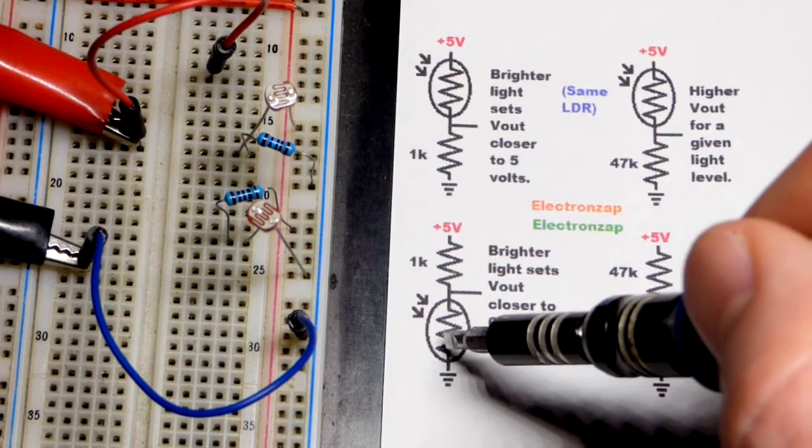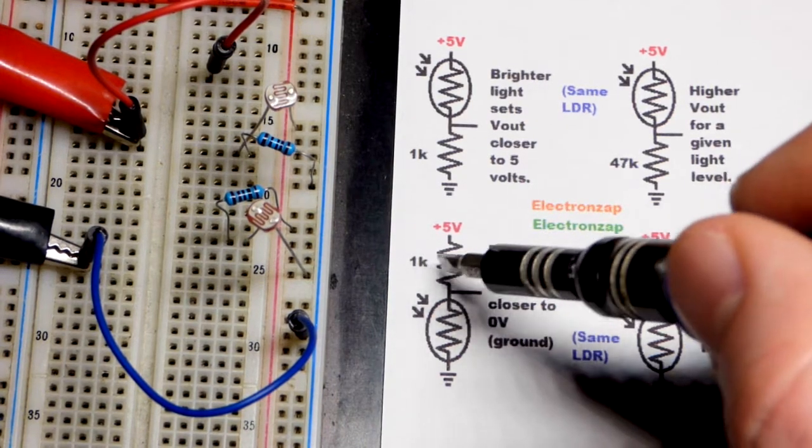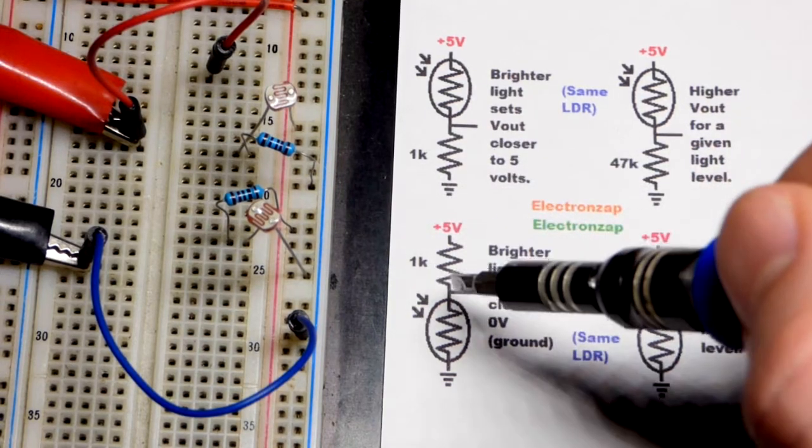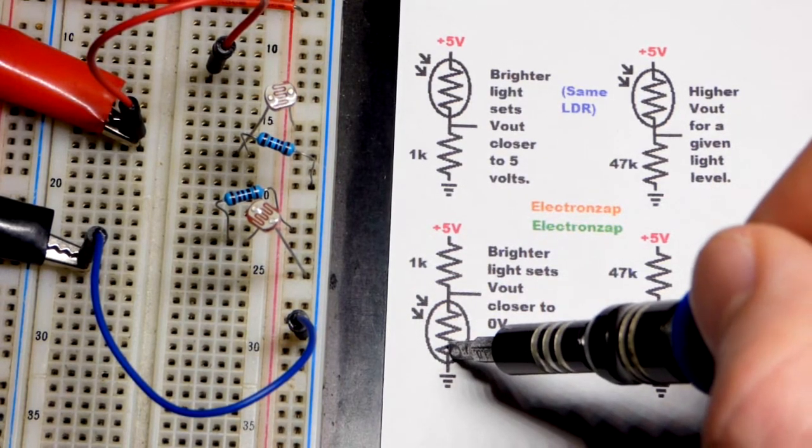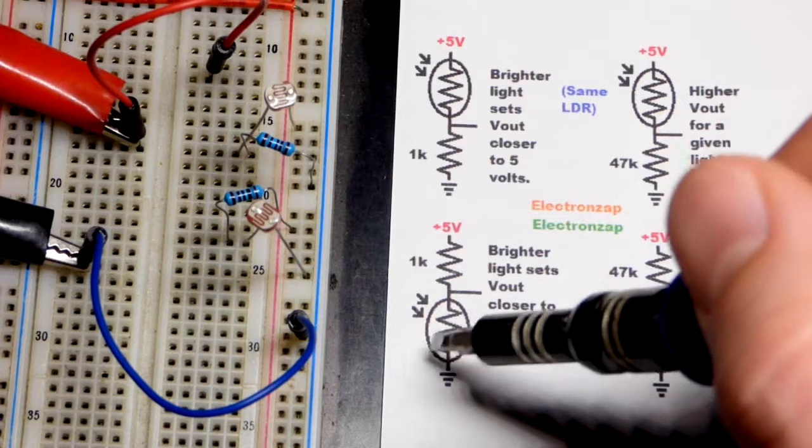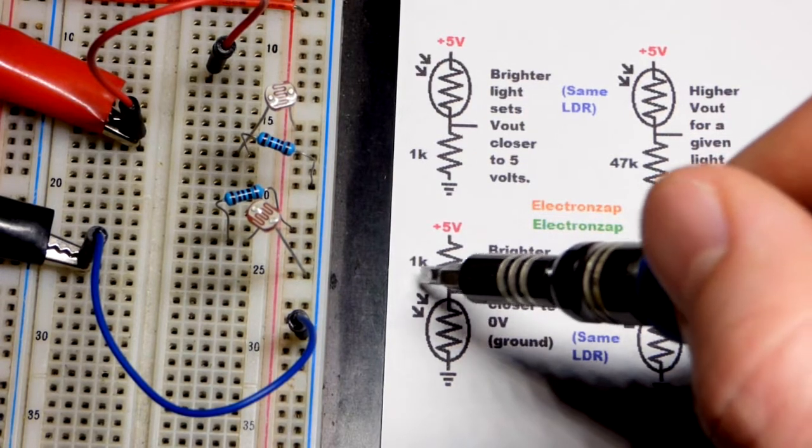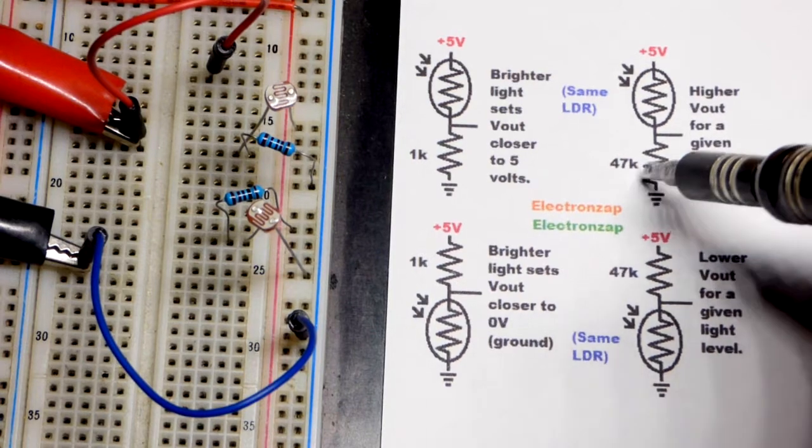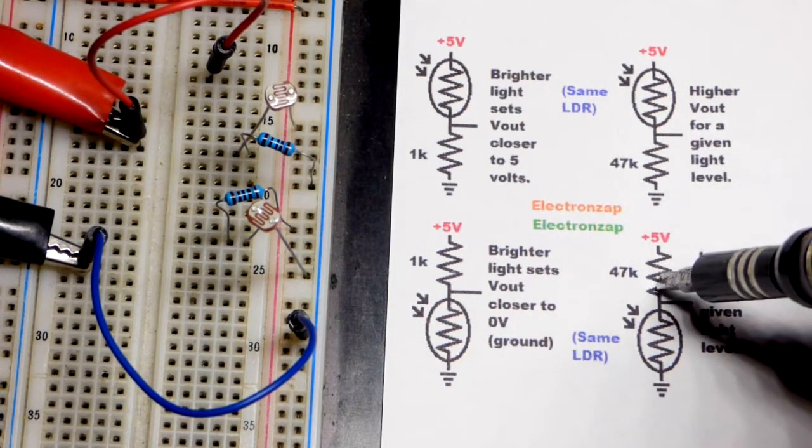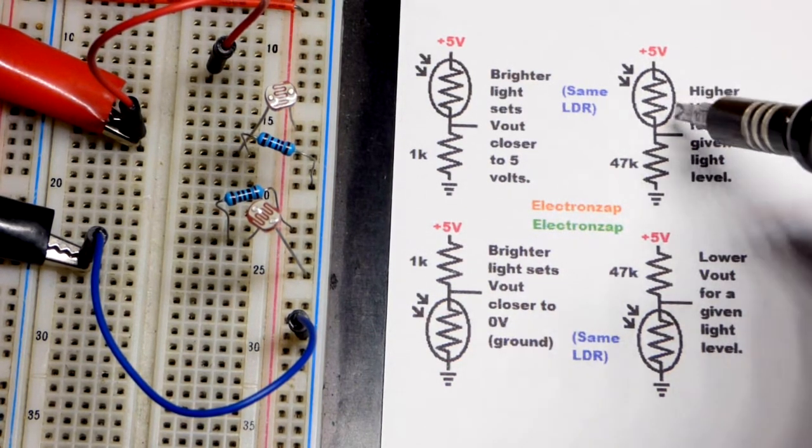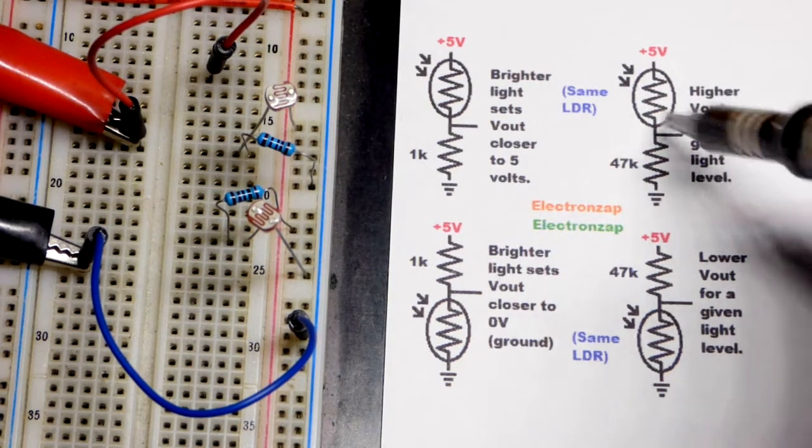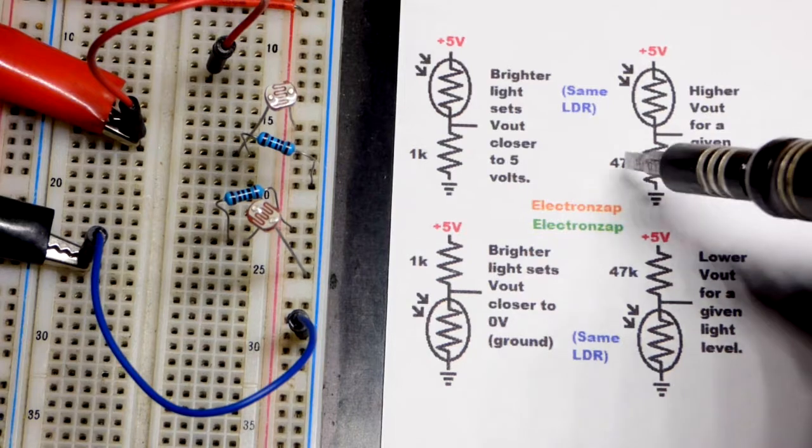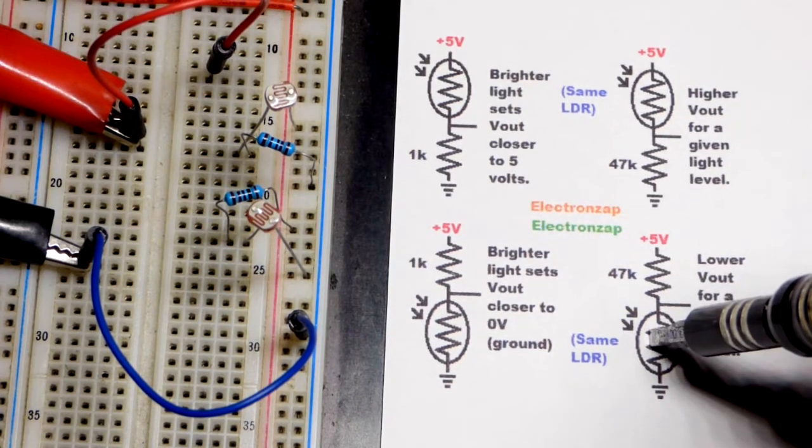So I keep saying very bright because when you only have a thousand ohms of resistance on the other side of the divider than the light dependent resistor, it takes a lot of light to drop below, especially well below 1000 ohms. So we can just up the resistance of the fixed value resistor.